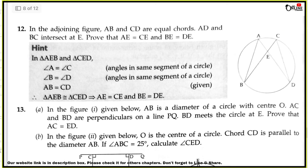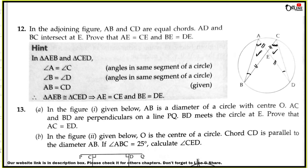Next, sum number 12: In the adjoining figure, AB and CD are equal chords; AD and BC intersect at E. Prove that AE equals CE and BE equals DE. This is a very easy problem. In triangles AEB and CED, the angles are equal because they lie on the same segment. Since AB equals CD (equal chords), the two triangles are congruent. Therefore AE equals CE and BE equals ED by CPCT.